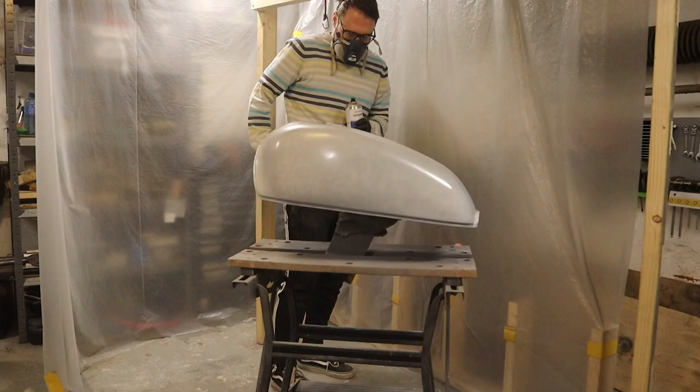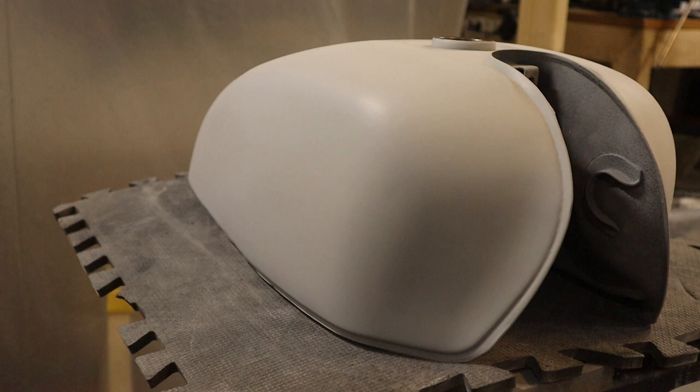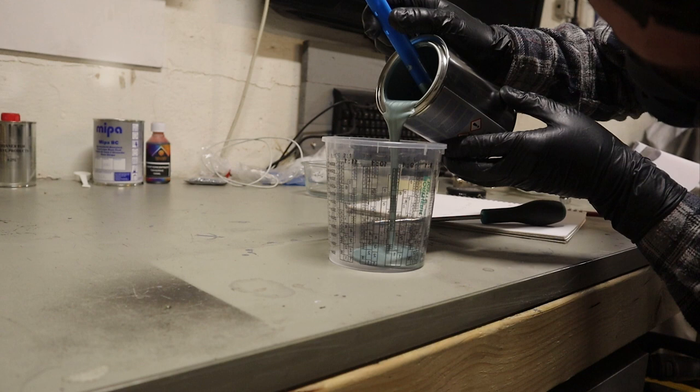My theory for why I sanded through is that a dent does not only cause a low spot, it also creates a ridge, sort of a volcano shape, and this is very hard to get out just by using filler. Ideally I would have used a hammer to knock down that edge before applying body filler, but I am nowhere near confident enough to take a hammer to my gas tank.